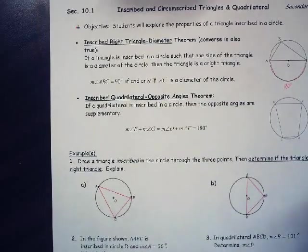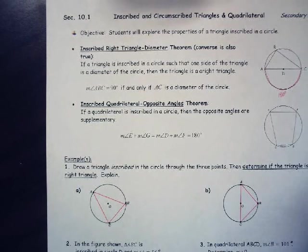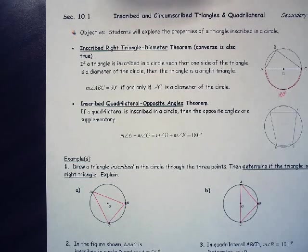Okay, that was it for 9.5. Let's go to 10.1. Inscribed and circumscribed triangles and quadrilaterals. These are triangles drawn inside of a circle and a quadrilateral drawn inside a circle. Students will explore the properties of a triangle inscribed in a circle.